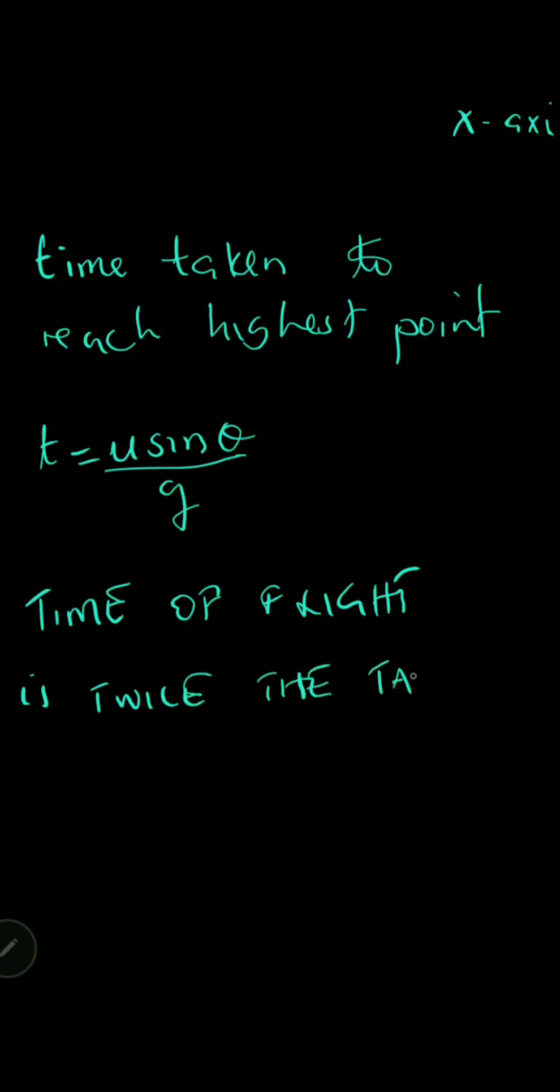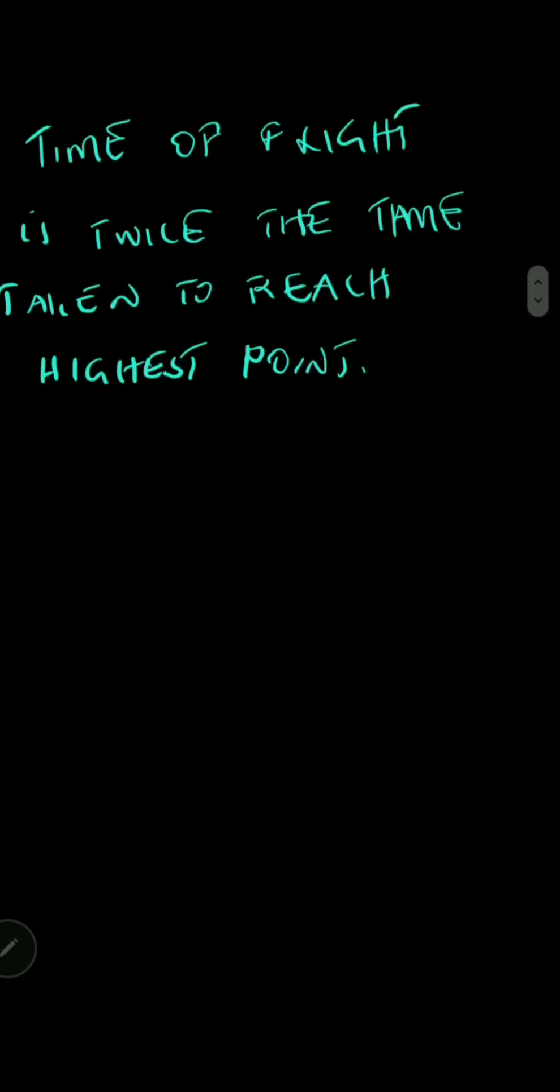So the time of flight is simply twice the time taken to reach maximum height or the highest point the trajectory will ever reach. That will therefore mean that T for the time of flight, which is denoted by a capital T, would be equal to two times the time taken to reach the highest point. So it would be capital T equals two times small t.